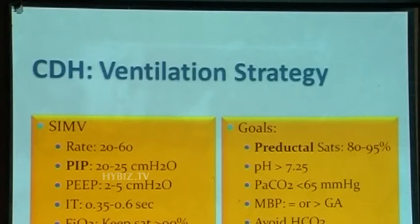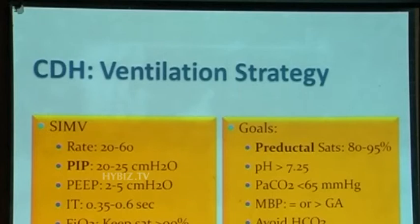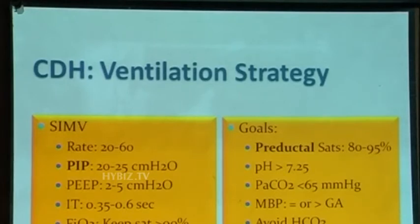There is data about avoiding bicarbonate and avoiding paralysis in CDH. Yesterday we talked about paralysis in meconium aspiration PPHN, but here paralysis has actually been shown to cause problems — you end up using higher pressures and lose the spontaneous breathing effort of the baby. Trying to avoid paralysis is probably better in CDH.